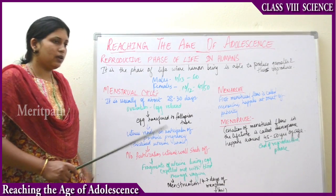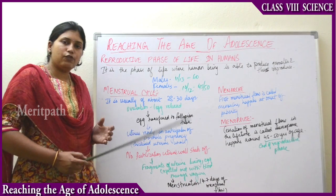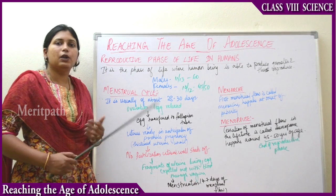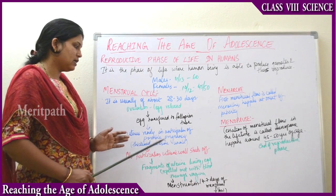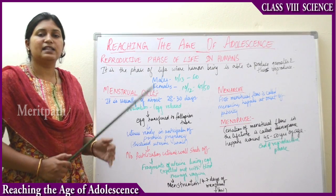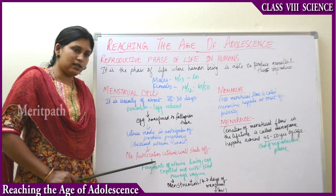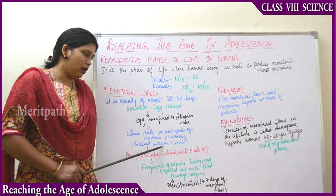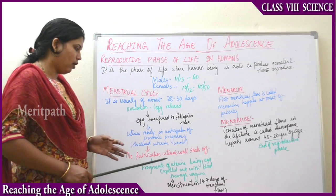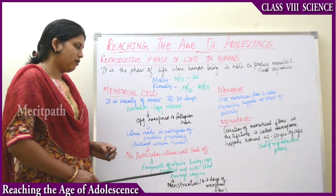The uterus thinks it may need to implant the embryo for development, so it makes itself ready by thickening its walls so that fertilization can happen and the embryo can develop. The uterine wall begins to thicken and the uterus makes itself ready in anticipation of possible pregnancy. But if fertilization does not occur, then this thickened uterine wall will break and shed off, breaking into small fragments.